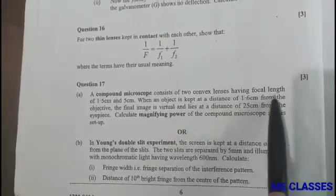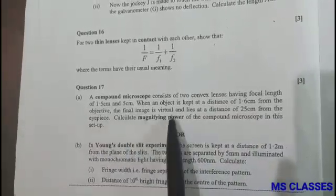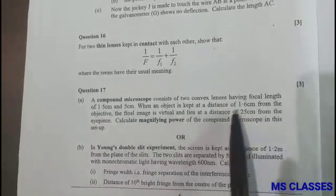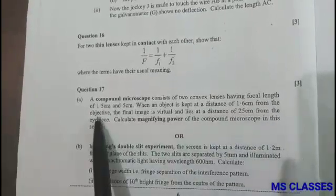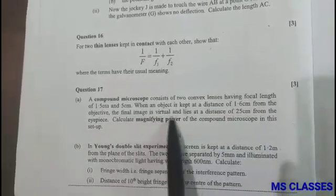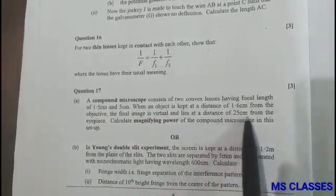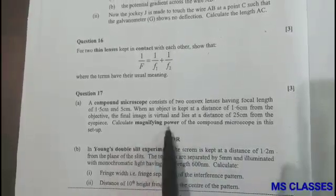Question 17, part A: A compound microscope consists of two convex lenses having focal length 1.5 and 5 centimeter. When an object is kept at a distance of 1.6 centimeter from the objective, the final image is virtual and lies at a distance 25 centimeter. Calculate the magnifying power.